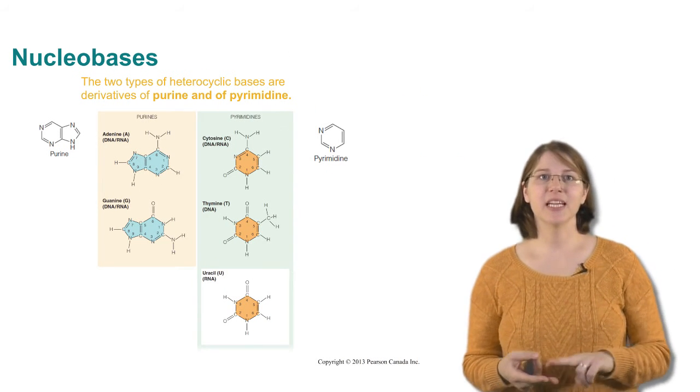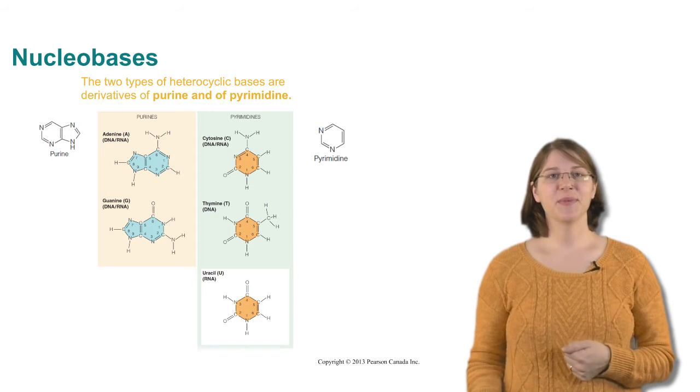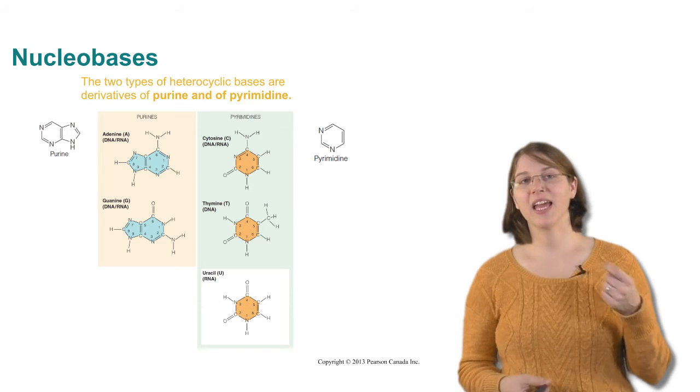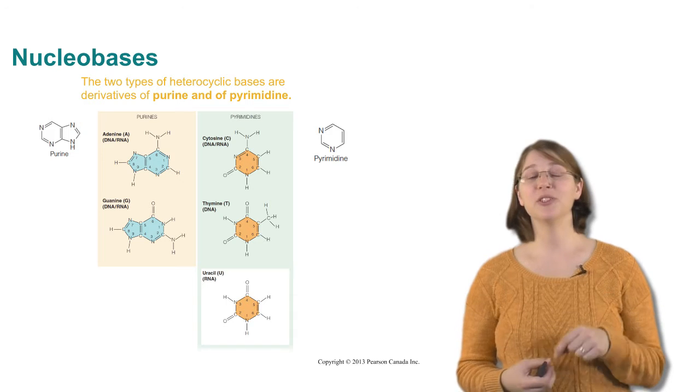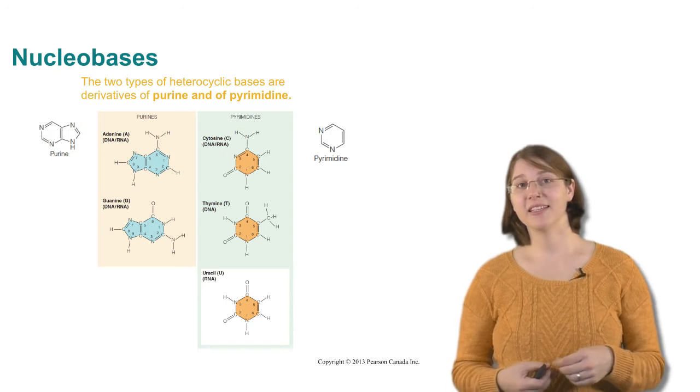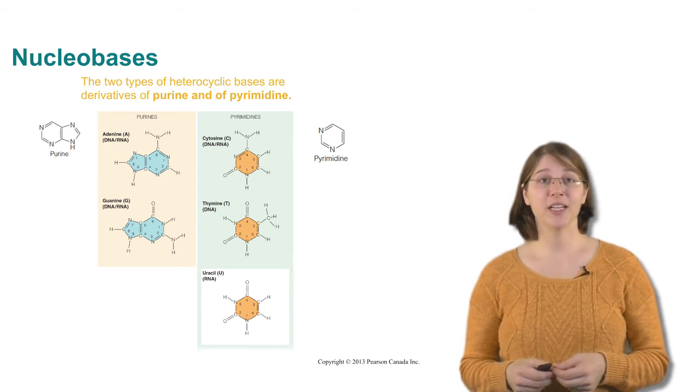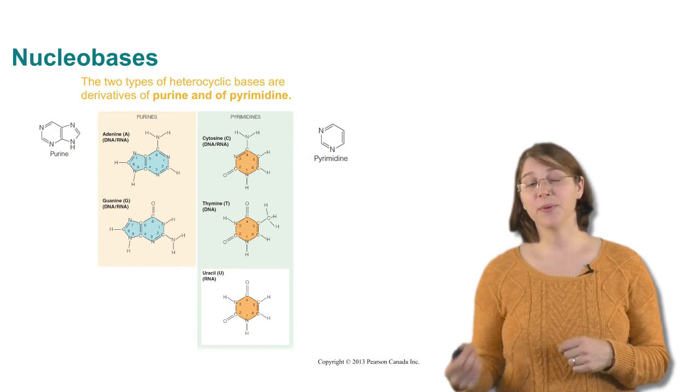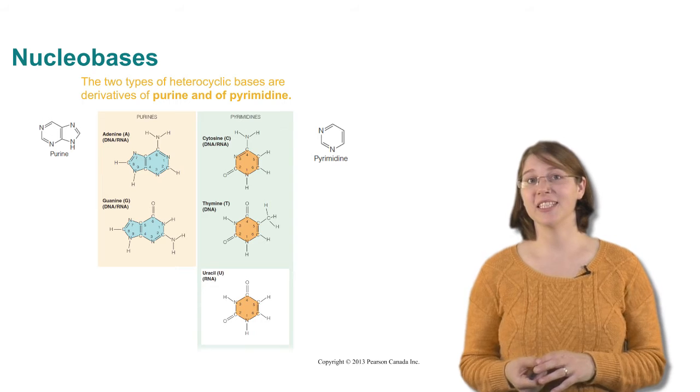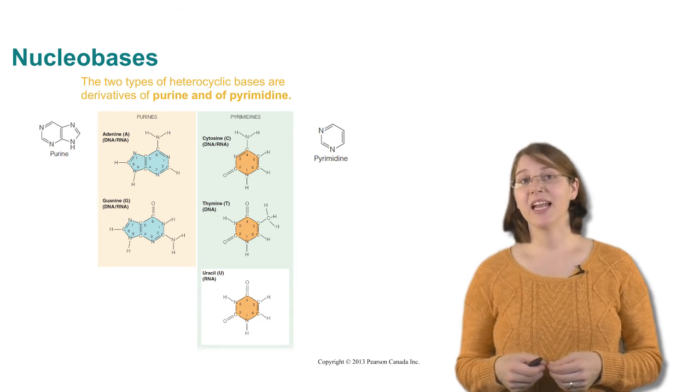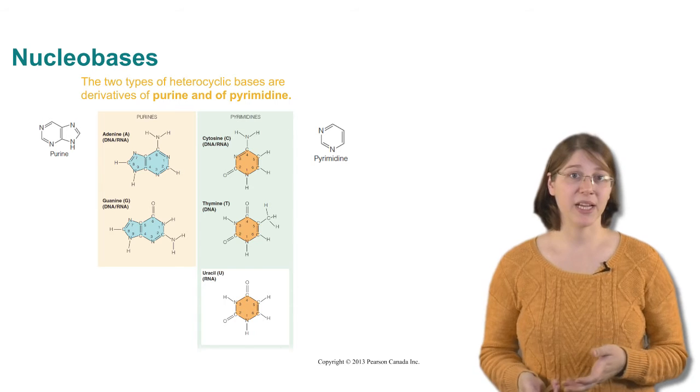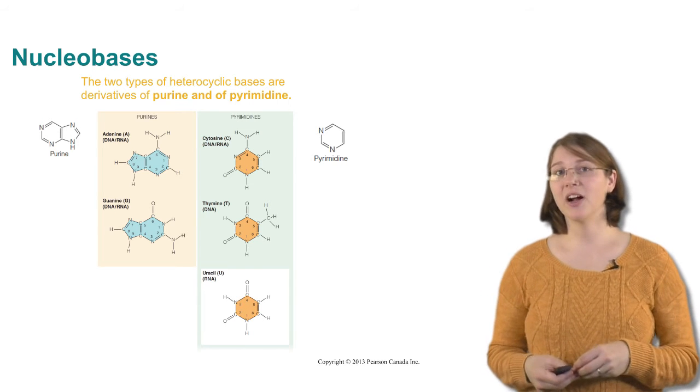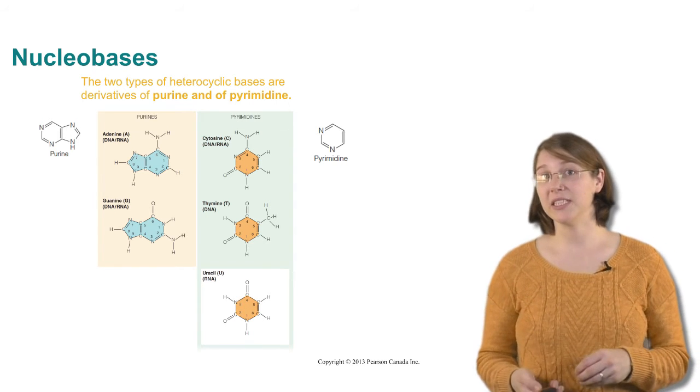There are two types of bases, purines and pyrimidines. Purines have a six-membered ring linked to a five-membered ring. And they are composed of adenine and guanine, the A and the G base. Pyrimidines are the cytosine, thiamine, and the uracil base. And they are a single six-membered ring. Uracil is only found in RNA, and thiamine is only found in DNA.